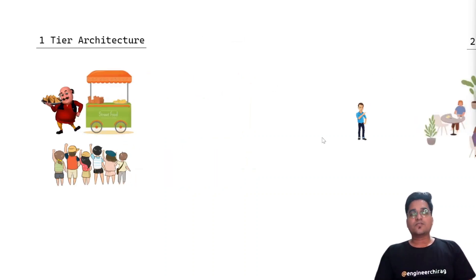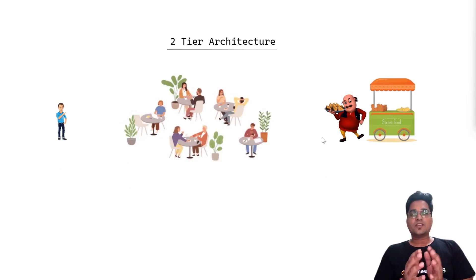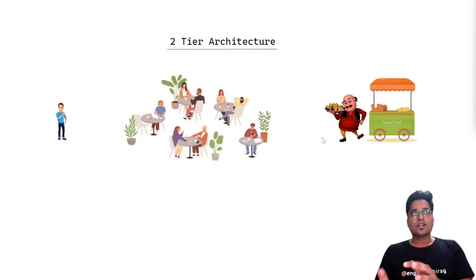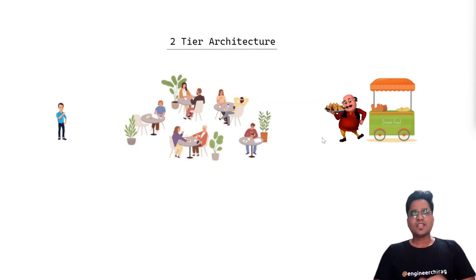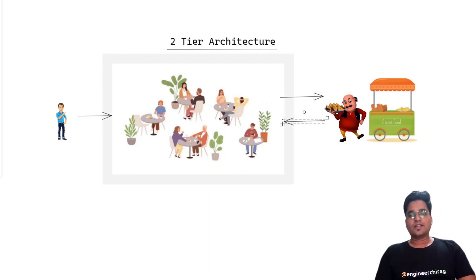So what will we do in 2-tier? In 2-tier, we have a small seating arrangement where people arrive, sit down, place an order, and then leave. So if we are working on this setup, customers come in, order, and finally go out.